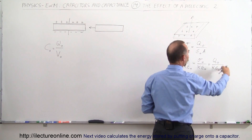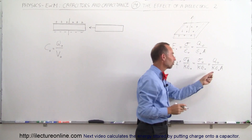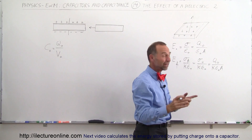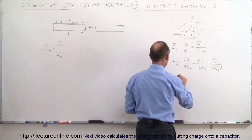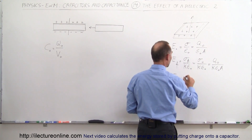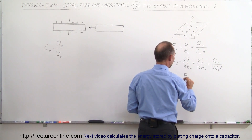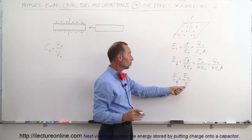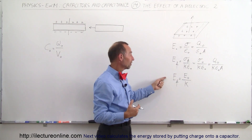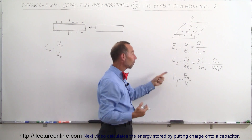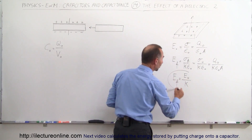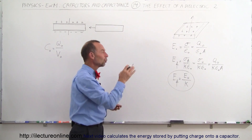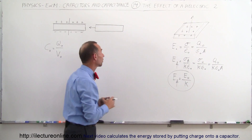Notice that Q_initial divided by ε₀ and A equals the initial electric field E₀. So we can say the new electric field equals the initial electric field divided by the dielectric constant k: E_final = E₀/k. If k is 2 you'll have half the electric field strength; if k is 3 you'll have one-third the electric field strength. The final electric field is only a fraction of the original electric field when you put a dielectric between the plates.